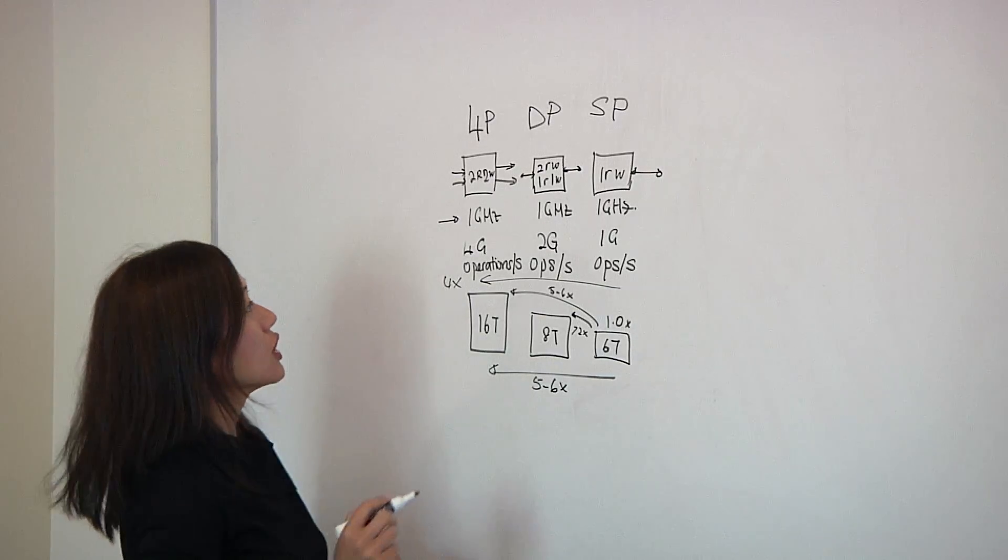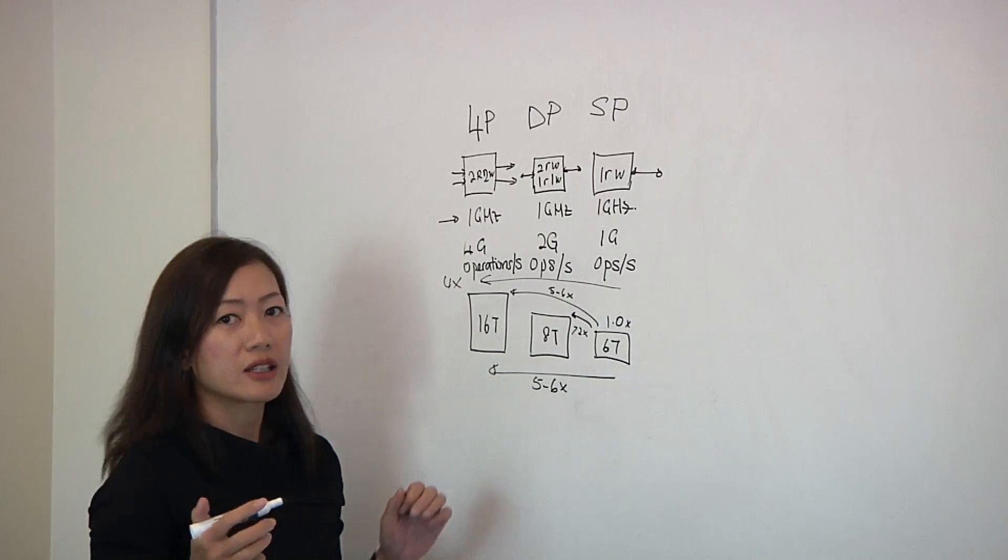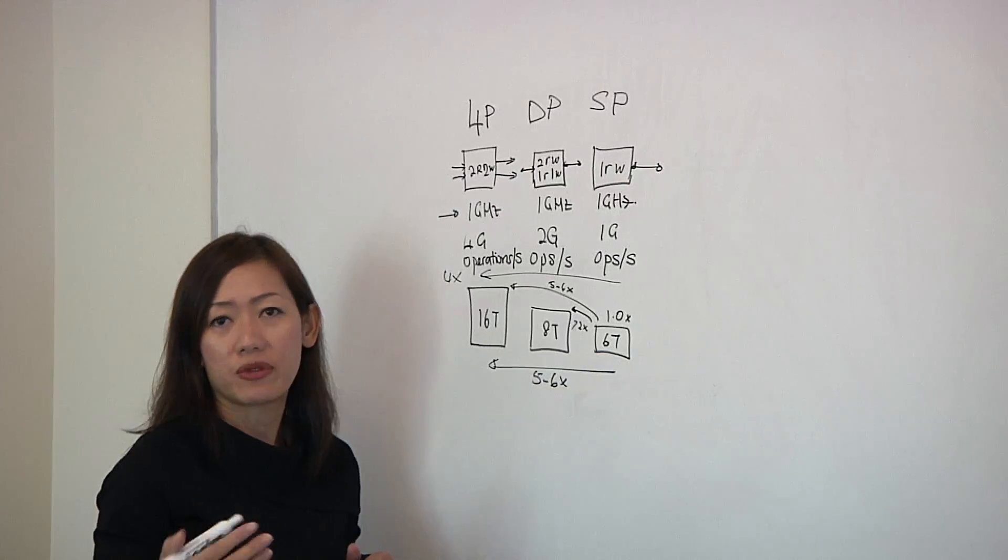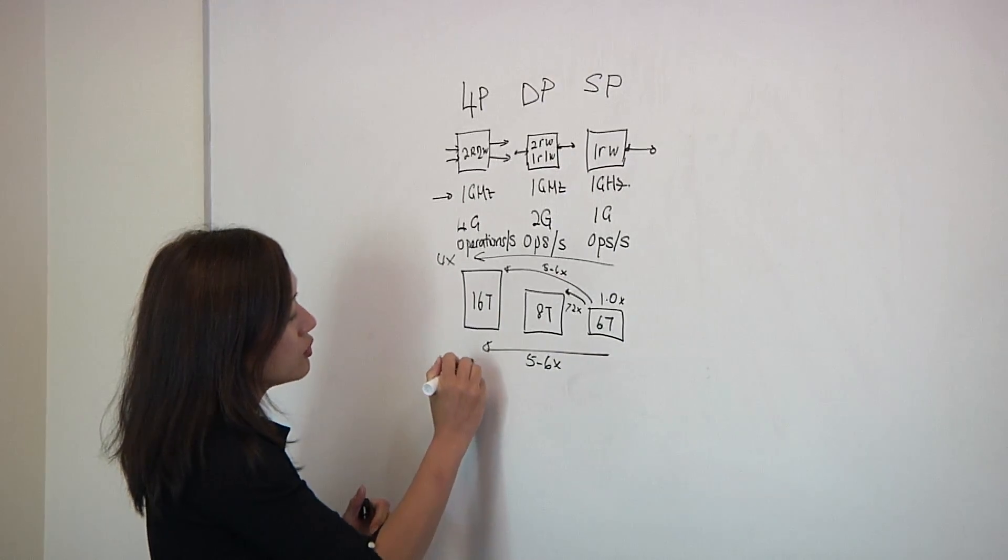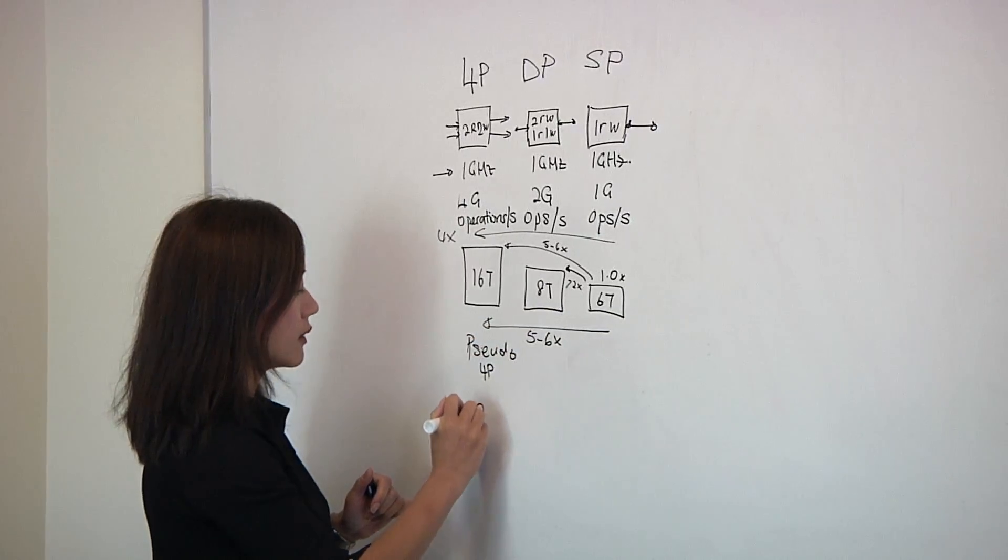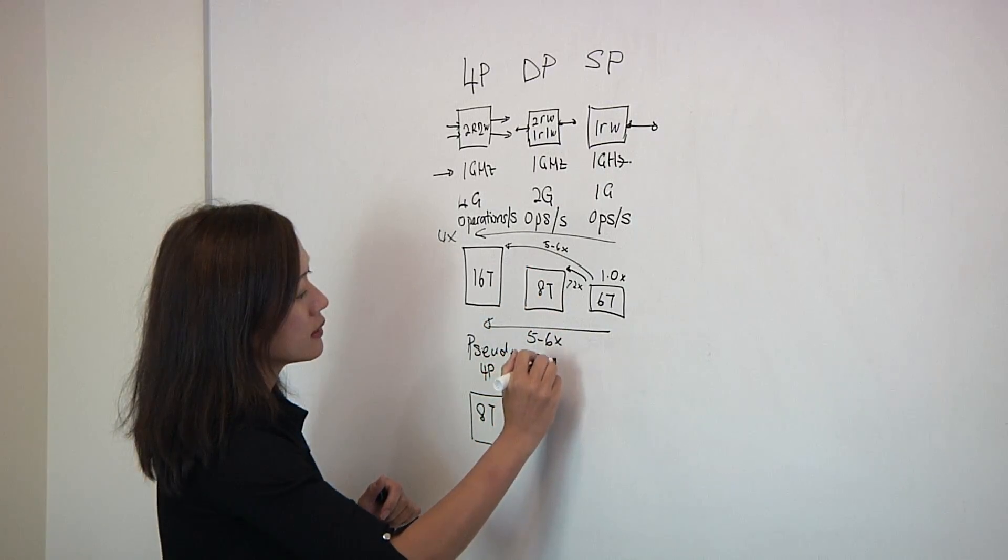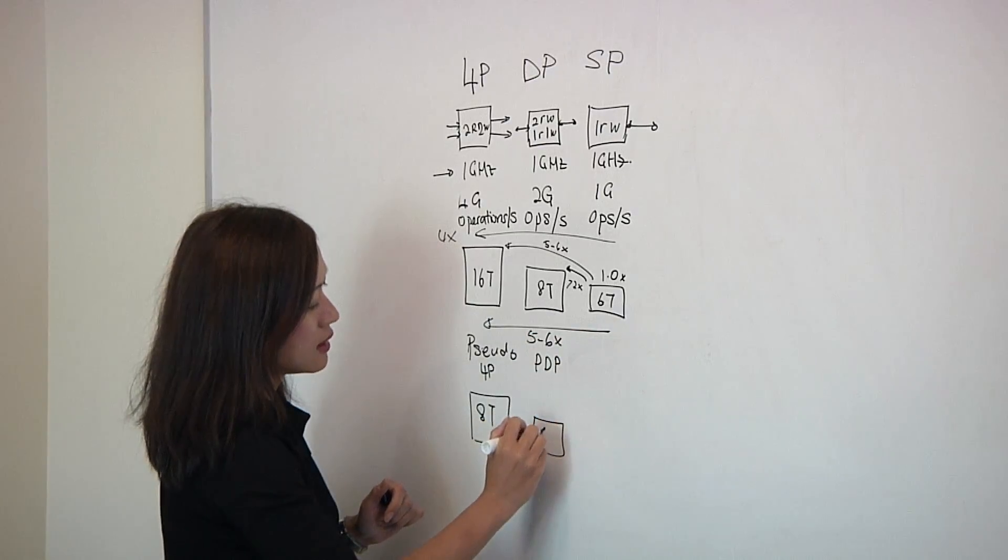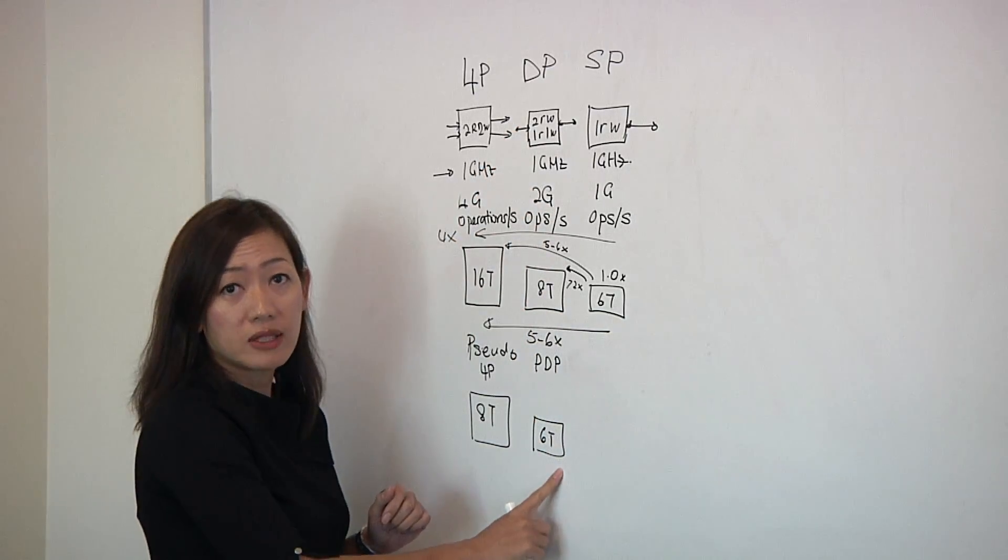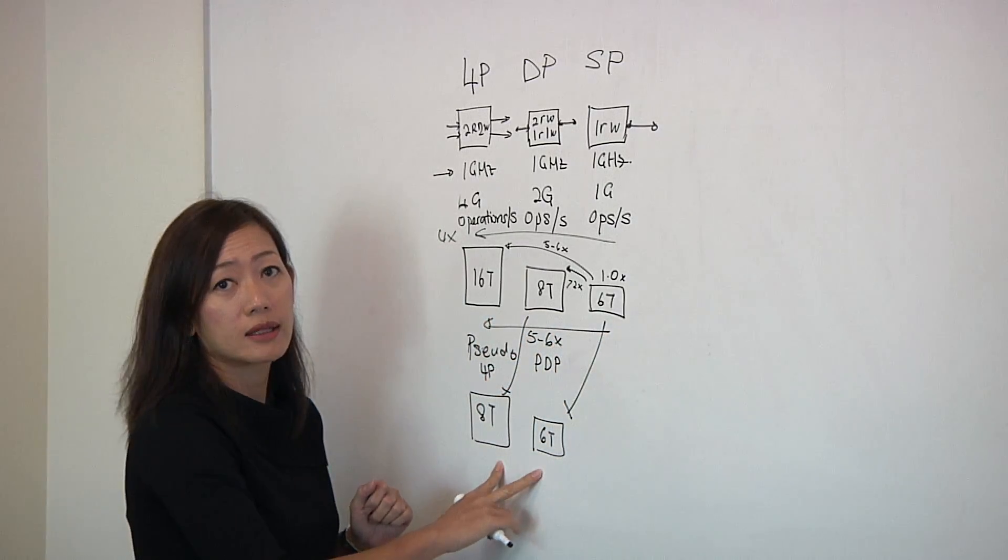With the pseudo-architecture, as we discussed before, the pseudo-architecture is using a double-pump internal clock that can double the operations rate for the bit cell. So for a pseudo-4-port SRAM, we are able to use the 8T bit cell inside the memory. And with the pseudo-dual-port architecture, we are using the 6T bit cell inside the memory. By double-pumping it, we're getting the same multiport functionality, but with a smaller bit cell in the pseudo-port architecture.